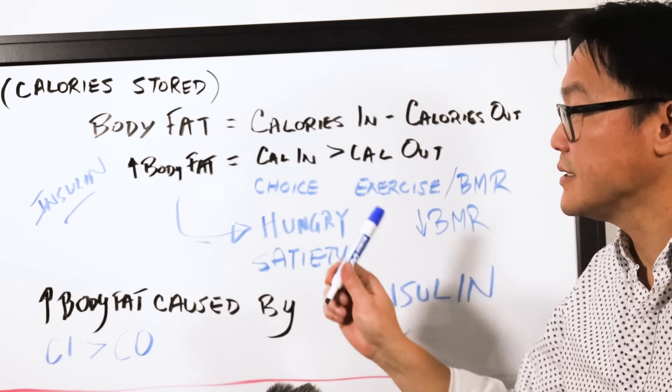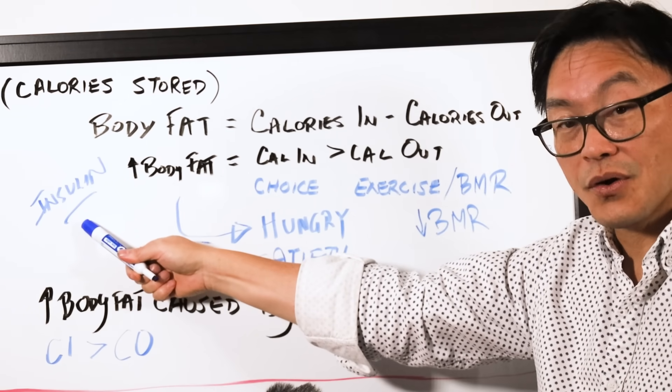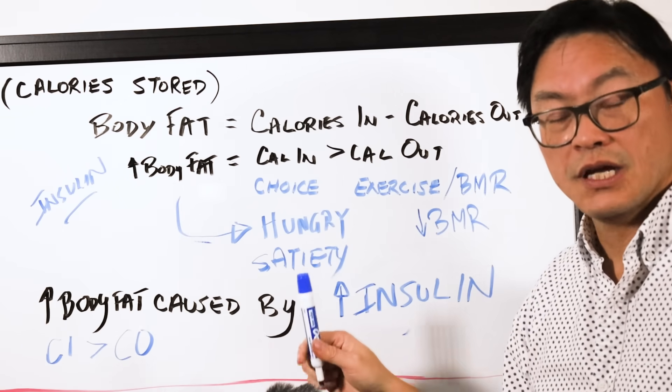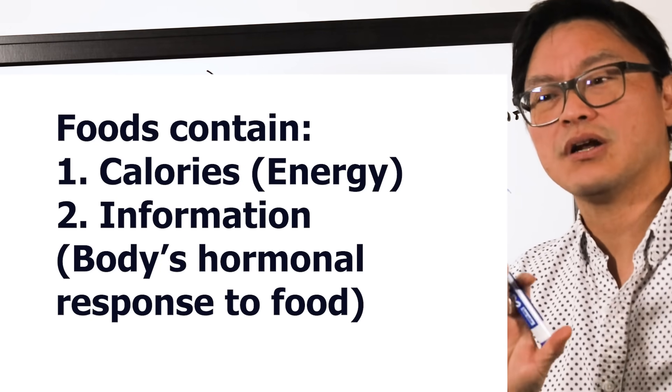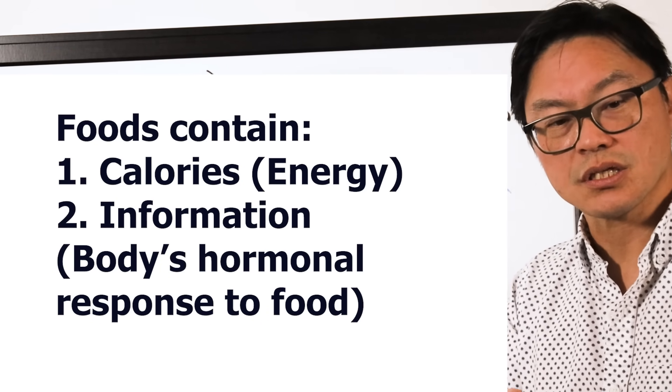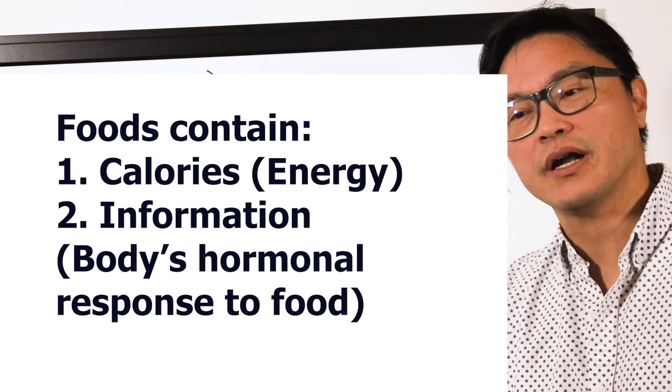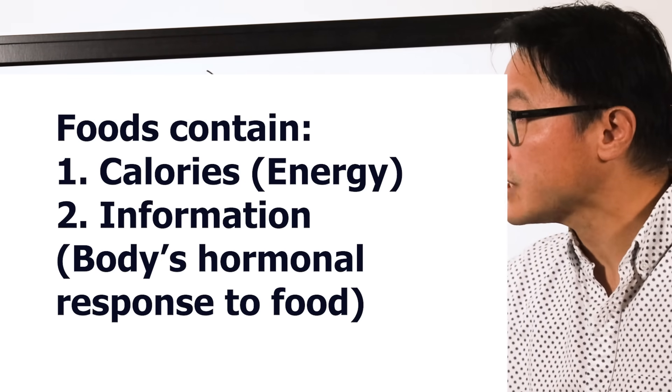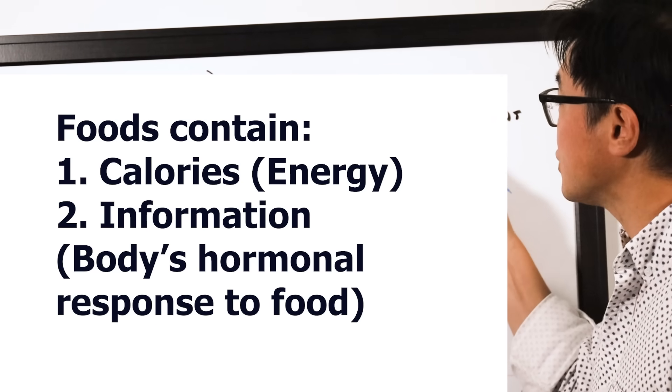Why? Because the foods release the hormones, which is information. So food contains not just the calorie, but it also contains the instructions of what to do with those calories. It tells your body, should I store those calories as body fat? Or should I burn those calories?